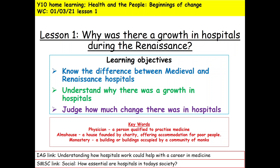For today's lesson we've got three learning objectives. Number one, to know the difference between medieval and Renaissance hospitals. Number two, to understand why there was a growth in hospitals during this period. And number three, to judge how much change there was in hospitals.